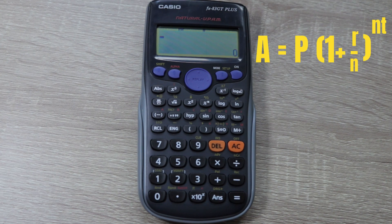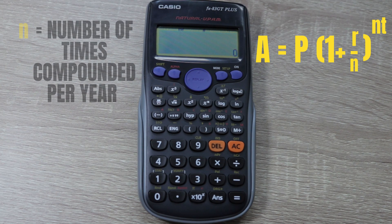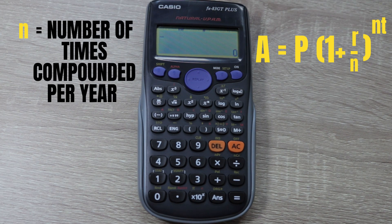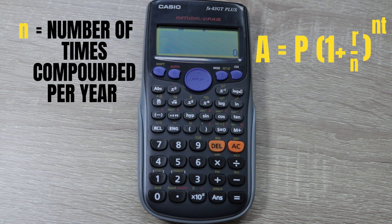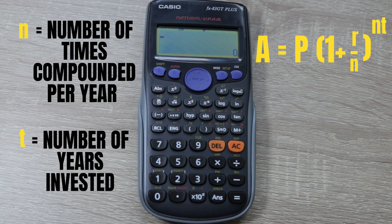The formula for this is A equals P, then 1 plus R over N, which is our number of times compounded per year, and that's to the power of NT. So N is number of times compounded per year, times T, which is our number of years.